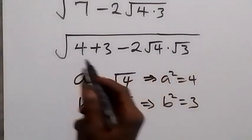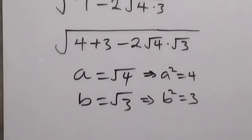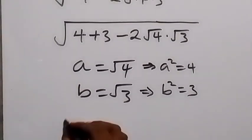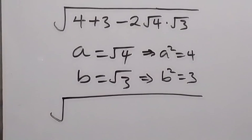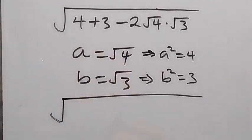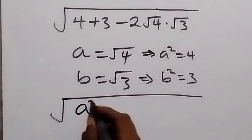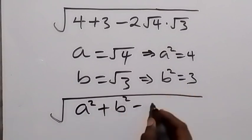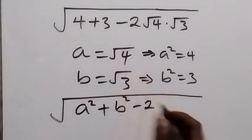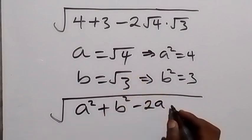We have square root of: 4 can be written as a², so we have a² plus 3, which can be written as b², then minus 2√4 (that's a) times √3 times √3.